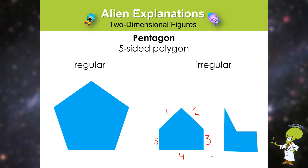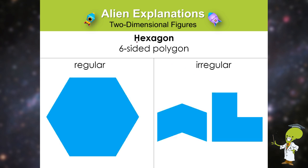After the five sided polygon is the six sided polygon called the hexagon. The easy way to remember hexagon is the X. There is an X in the word six and there is an X in the word hexagon.